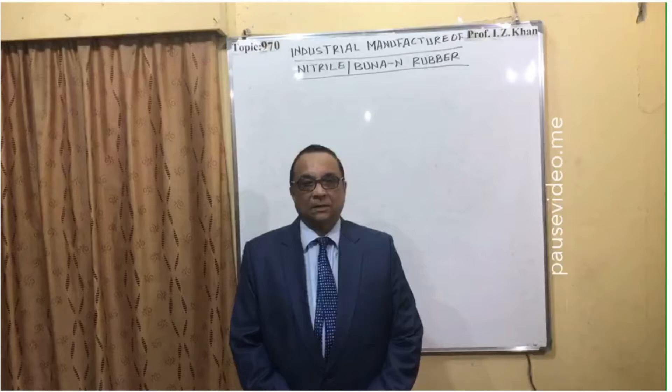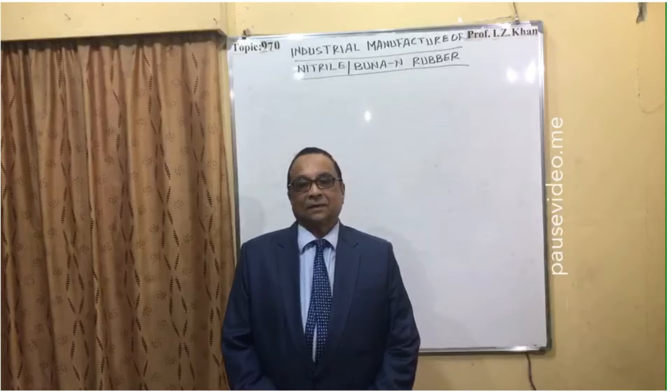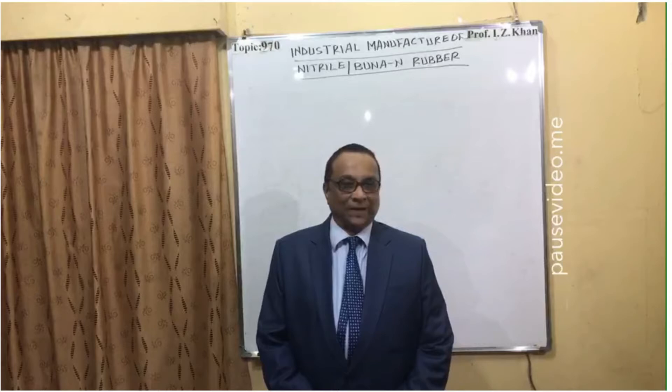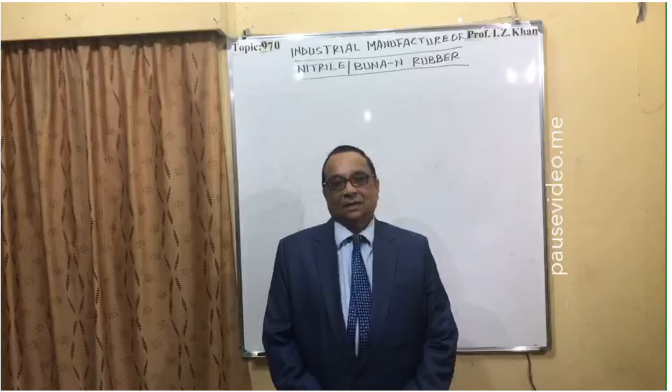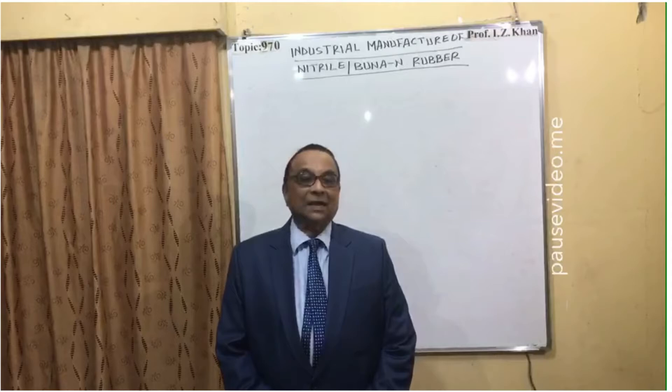Hello everyone, welcome to lecture number 970. Today's topic is the industrial manufacture of nitrile rubber, also known as Buna N rubber. This is a very special type of rubber. The raw materials required to manufacture nitrile rubber industrially are 75% butadiene and 25% acrylonitrile, which are polymerized together.